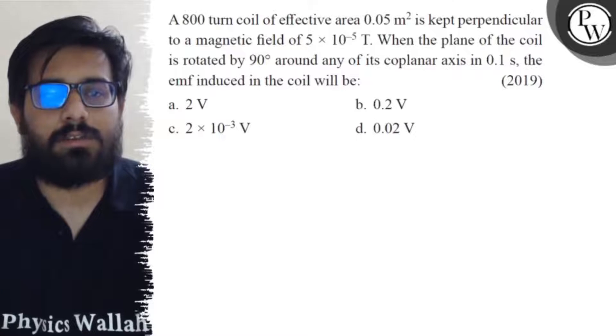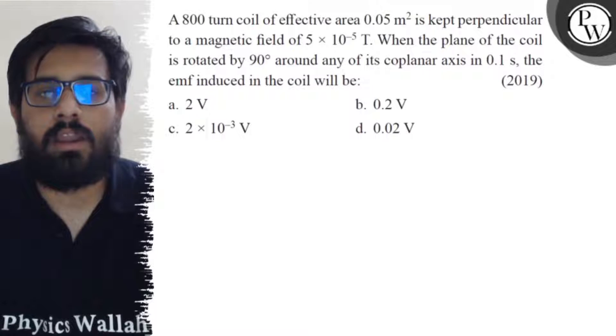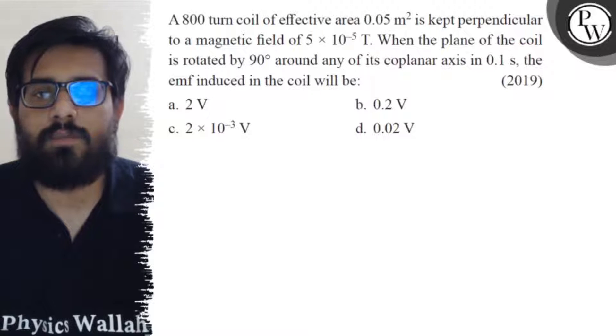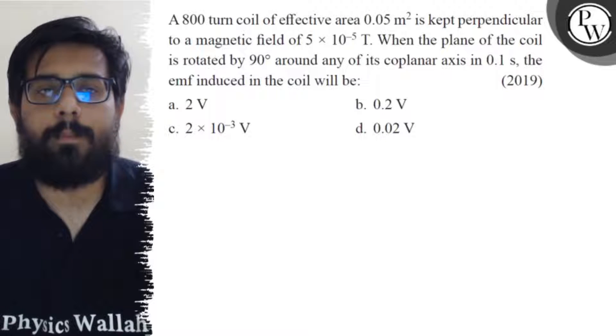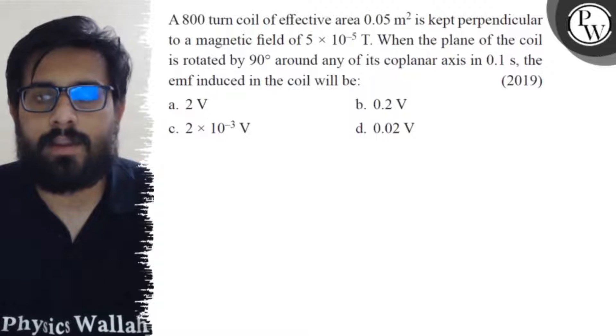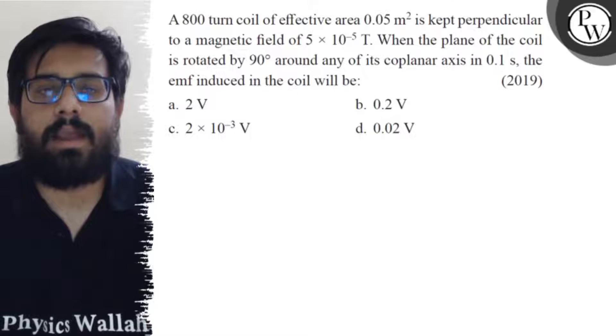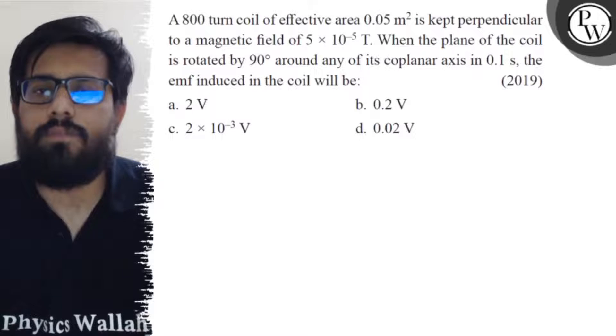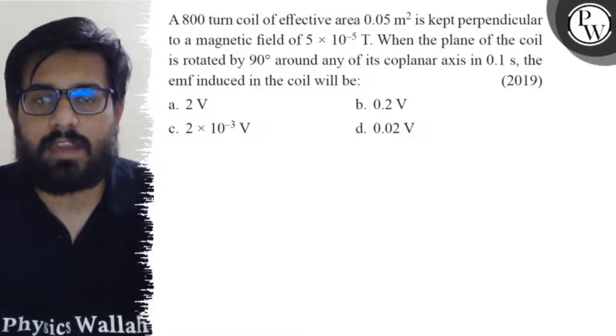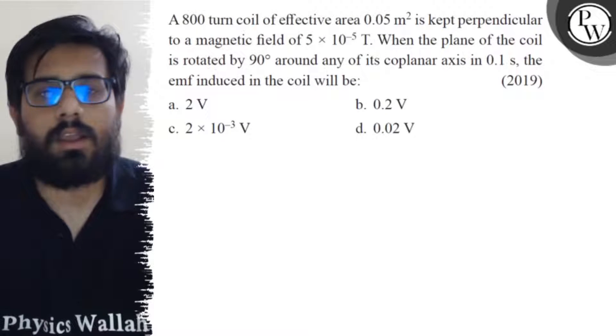Hello, so let's see the question. An 800 turn coil of effective area 0.05 meter square is kept perpendicular to a magnetic field of 5 × 10⁻⁵ Tesla. When the plane of the coil is rotated by 90 degrees around any of its coplanar axis in 0.1 second, the emf induced in the coil will be: